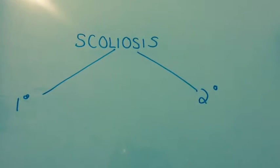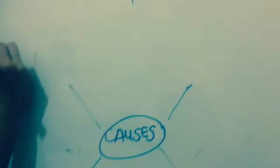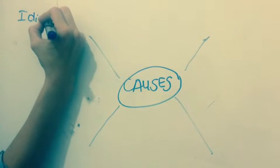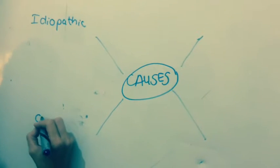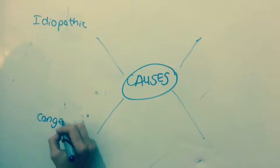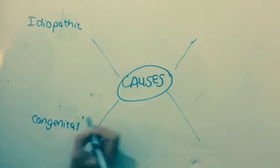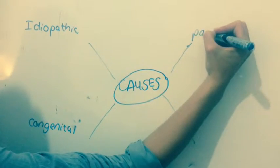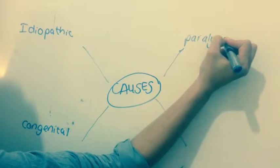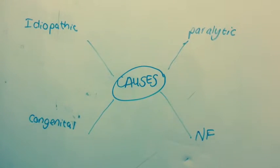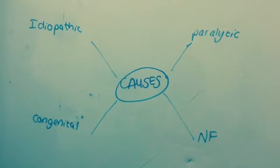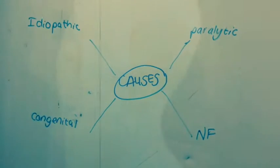The causes of primary scoliosis can be divided into the following: idiopathic, congenital, paralytic, and neurofibromatosis, with the main pathologies being the idiopathic and congenital causes of scoliosis.